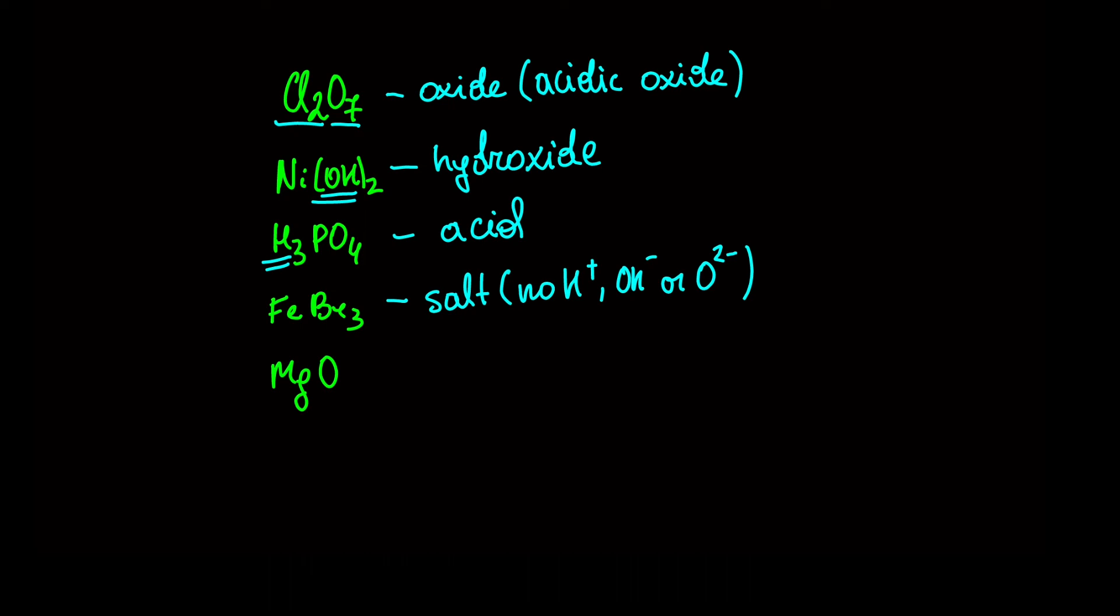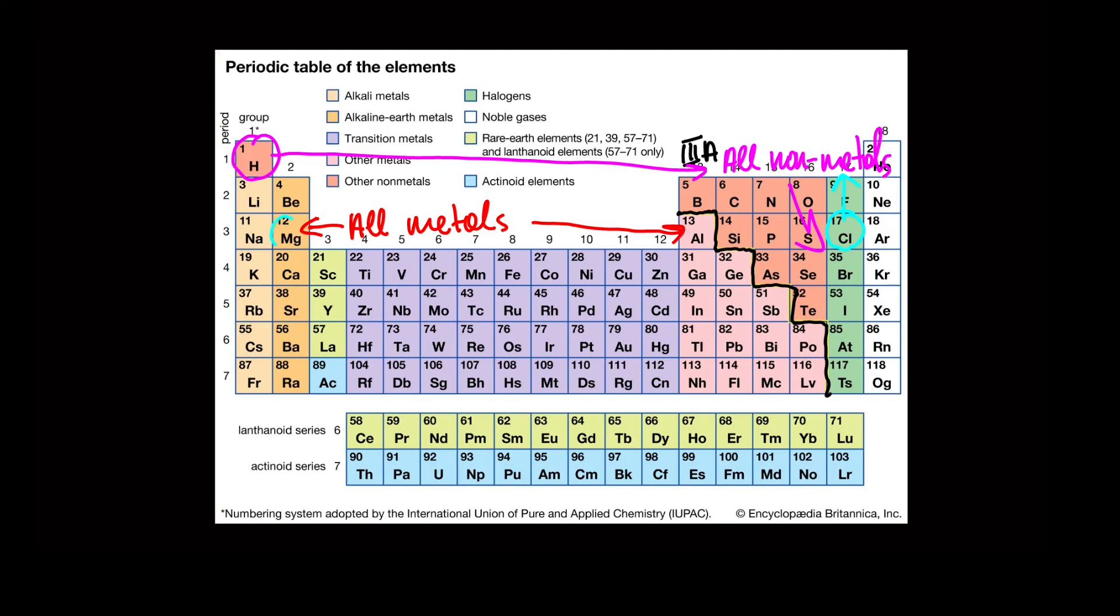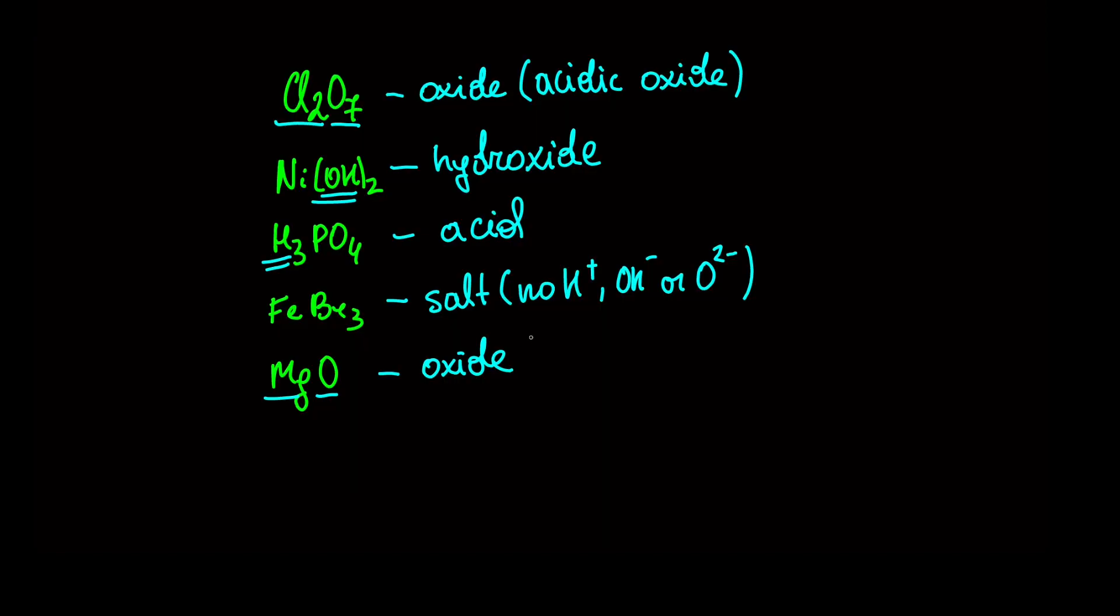The last one is MgO. It's made from two elements and has an oxygen atom. So it's oxide. Because Mg is a metal, we have a basic oxide.